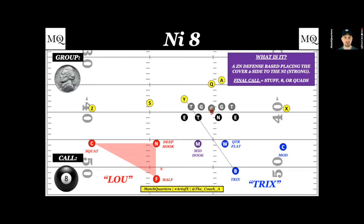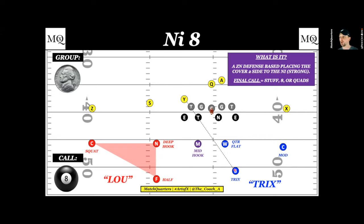Let's talk about these targeted coverages. This is going to be Nickel Eight — a Lew call, meaning we rotate the coverage to the left side. We get a deep hook; the key is that your nickel carries the vertical. The field safety works to a deep half and apexes. We have a squat or soft corner — he will not take anything under five yards and will not undercut the safety, so he works vertically. If both one and two go vertical, he sits underneath the vertical of one. On the backside we get quarters: a mod corner, a quarter-flat defender handling the wheel route, and a Tricks or Poach safety.